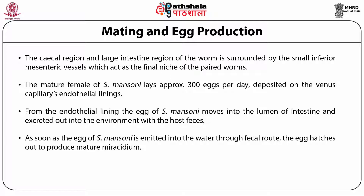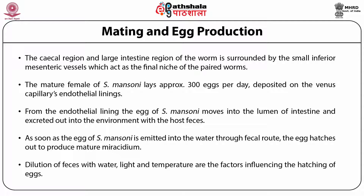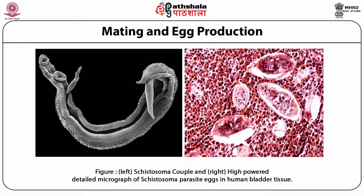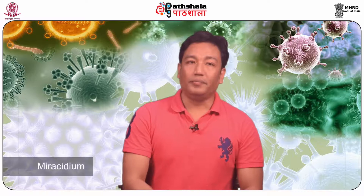As soon as the egg of Cystosoma mansoni is emitted into the water through the fecal route, the egg hatches out to produce a mature miracidium. Dilution of feces with water, light, and temperature are the factors influencing the hatching of eggs. This figure represents Cystosoma — on the left, and on the right, a high-powered detailed micrograph of Cystosoma parasite eggs in human bladder tissue.